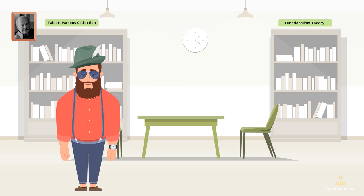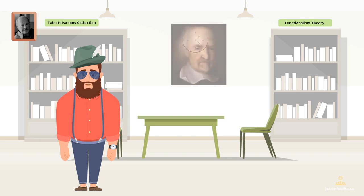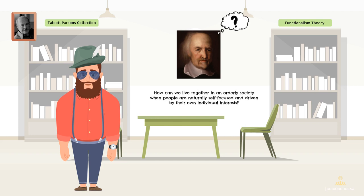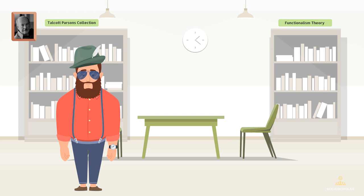One of Parsons' key interests was a question posed by a philosopher named Thomas Hobbes. Hobbes wondered how we could live together in an orderly society when people are naturally self-focused. Parsons wanted to solve this puzzle within his own theory. To answer Hobbes' question, Parsons came up with a theory about how and why people act.